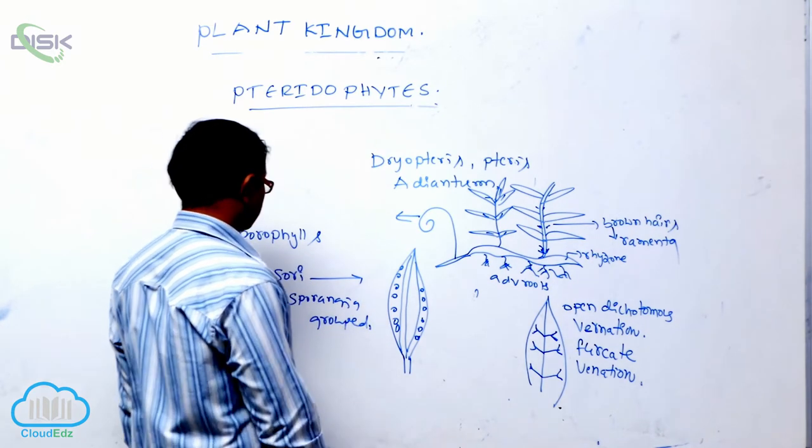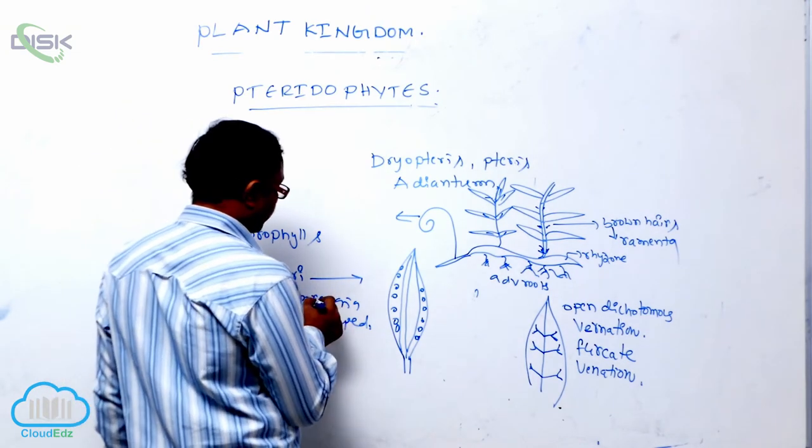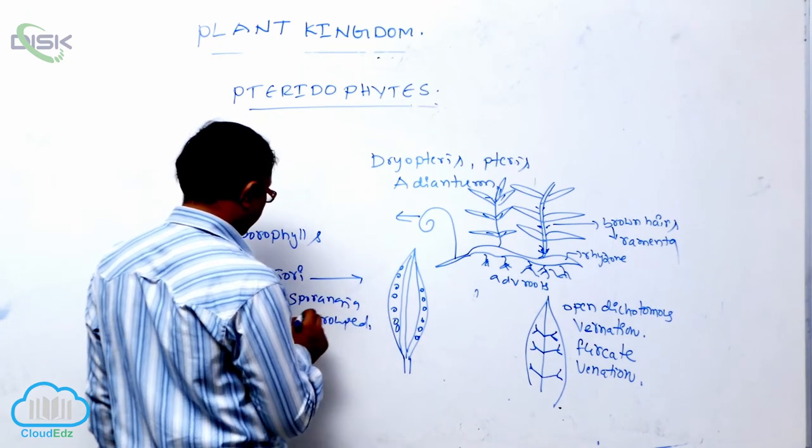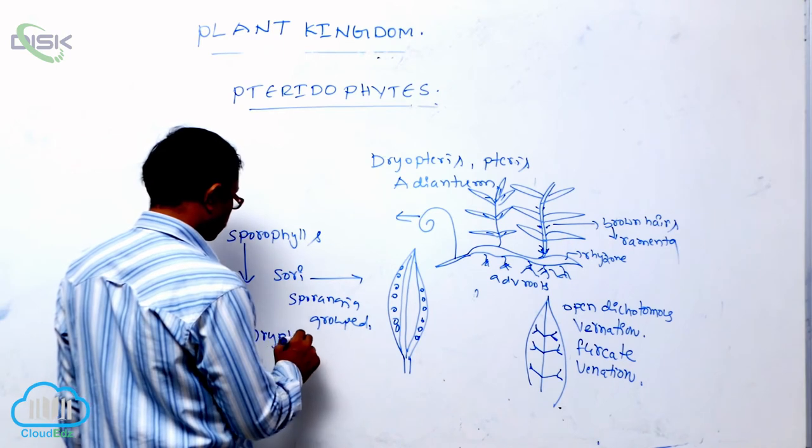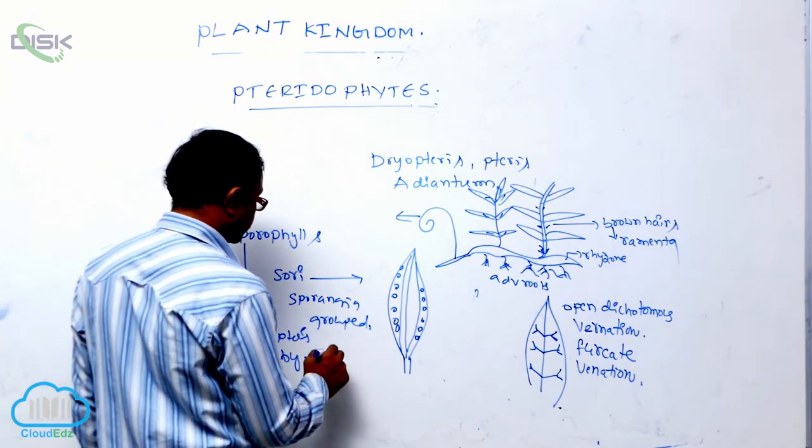Generally, sori are protected in pteridophytes by a cushion-like tissue known as indusium.